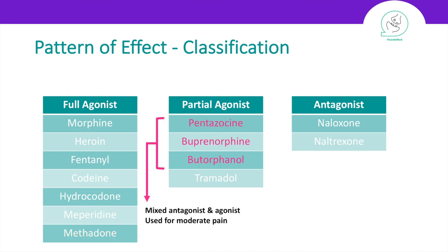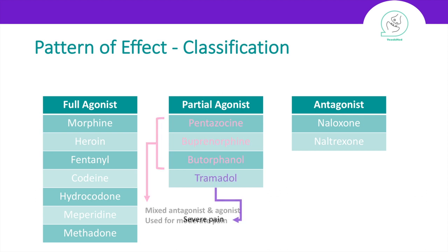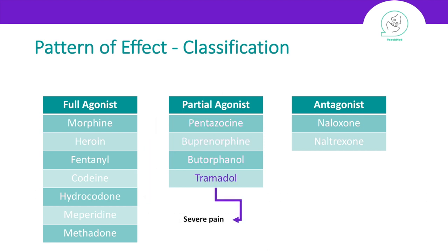The partial agonists include pentazocine, buprenorphine, and butorphanol, which are mixed agonist-antagonists used for moderate pain. Tramadol is used for severe pain.